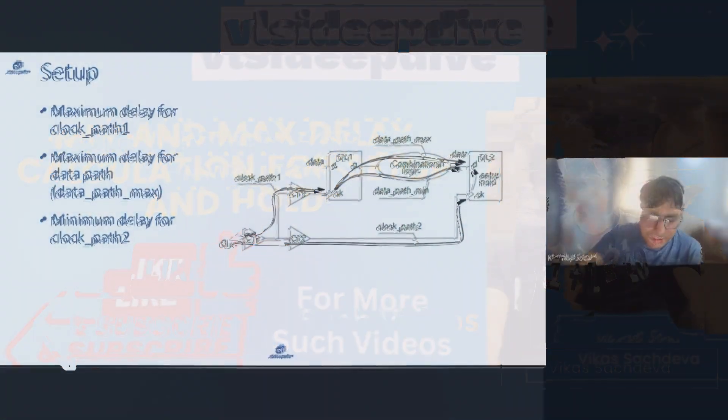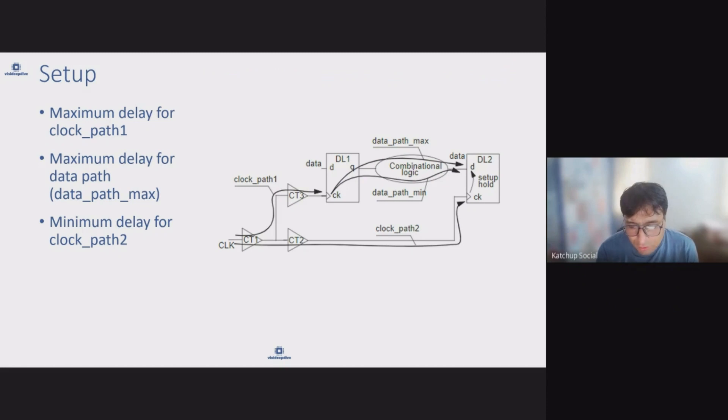Let's understand this using the setup case first. I have a flop here, DL1, sending data to a flop DL2, and the data is going to a combinational logic. This combinational logic can have multiple paths. For example, this is a combinational logic - you can have one path like this, another path. So from the same flop it is possible to have multiple paths in a combinational logic.